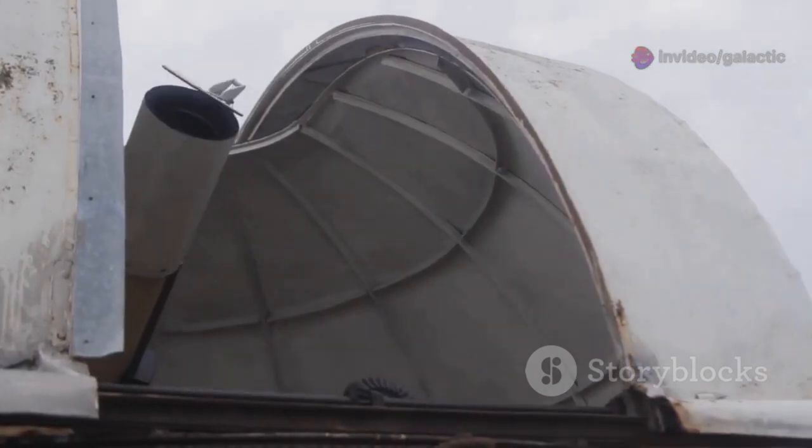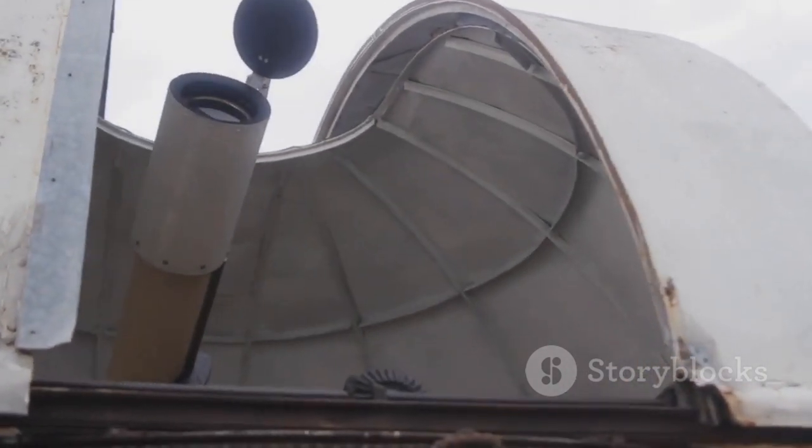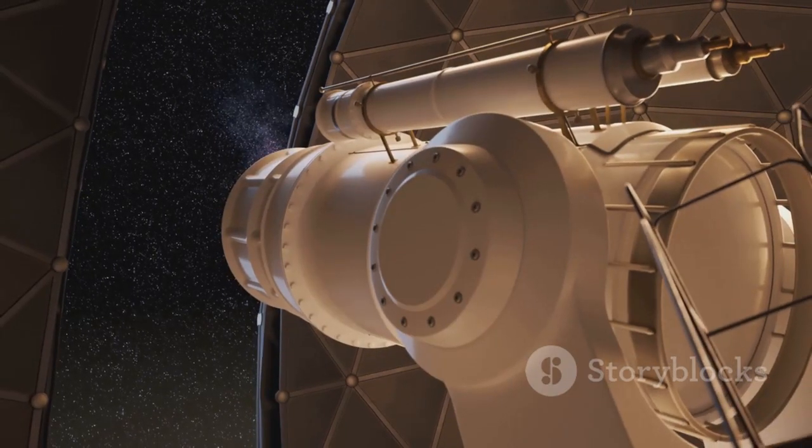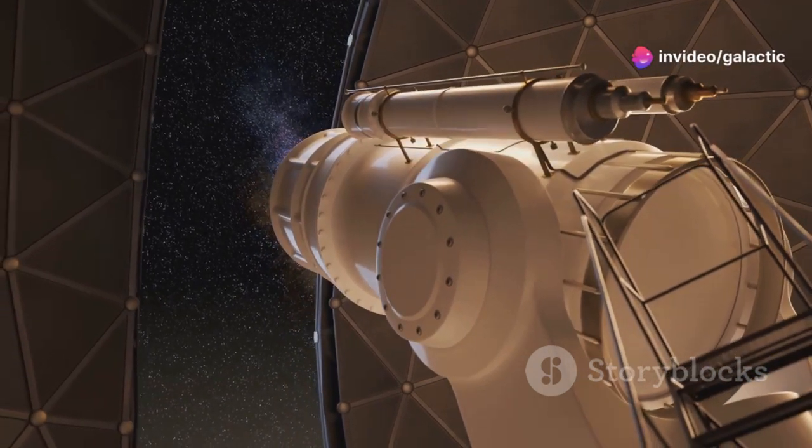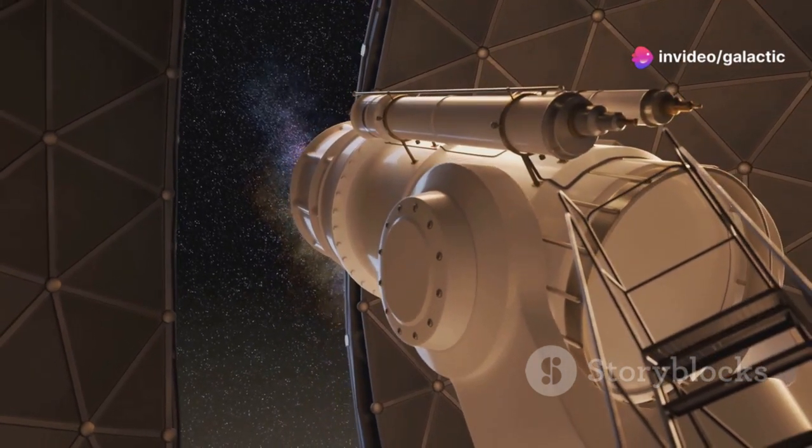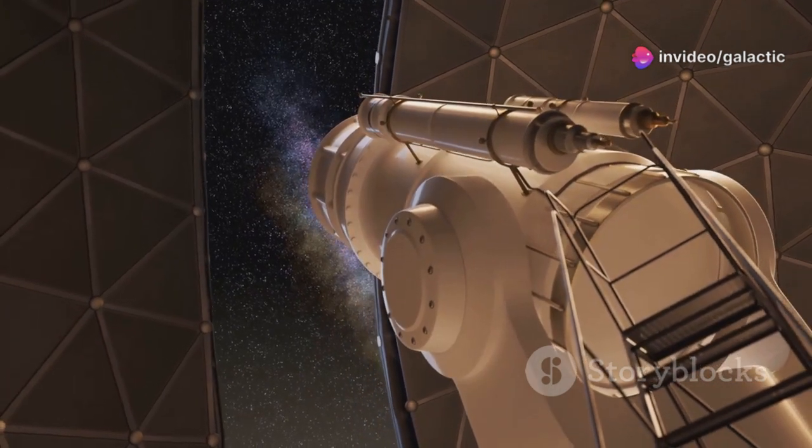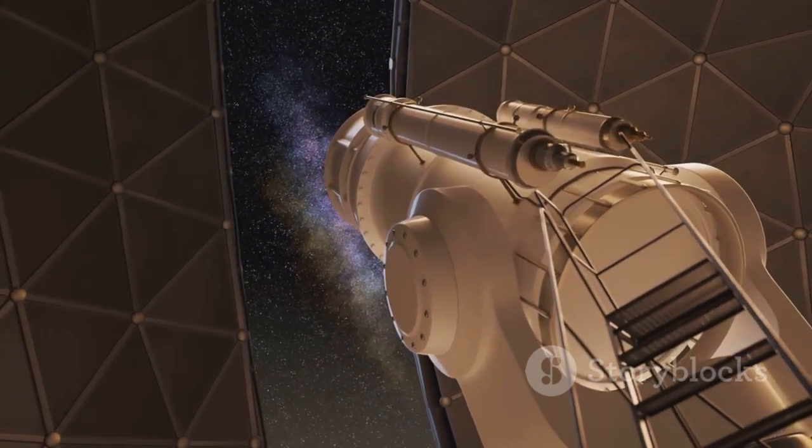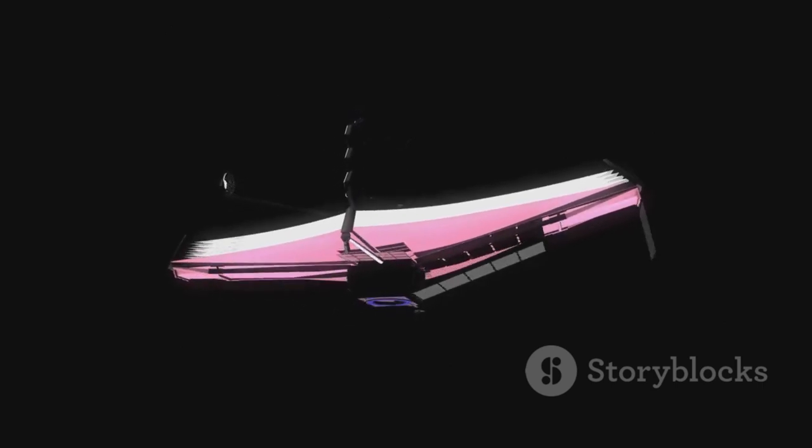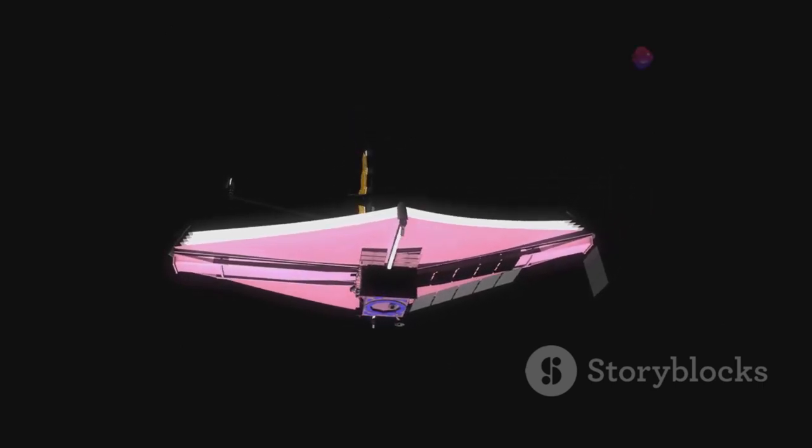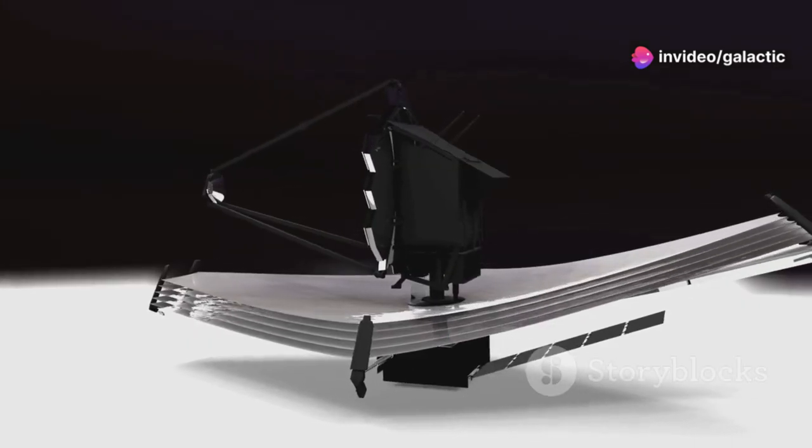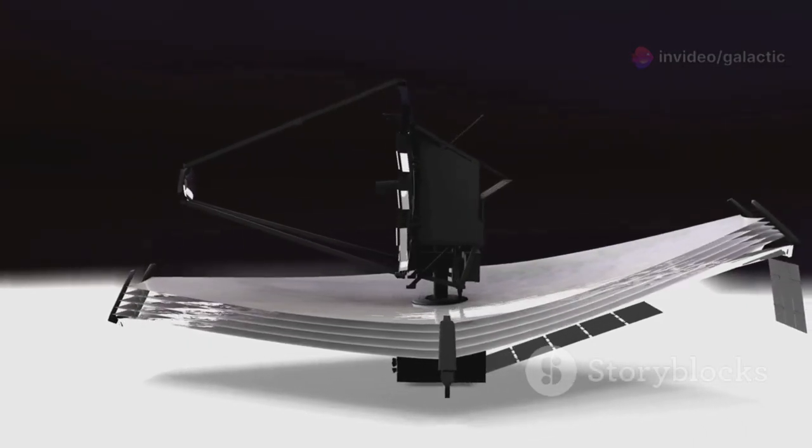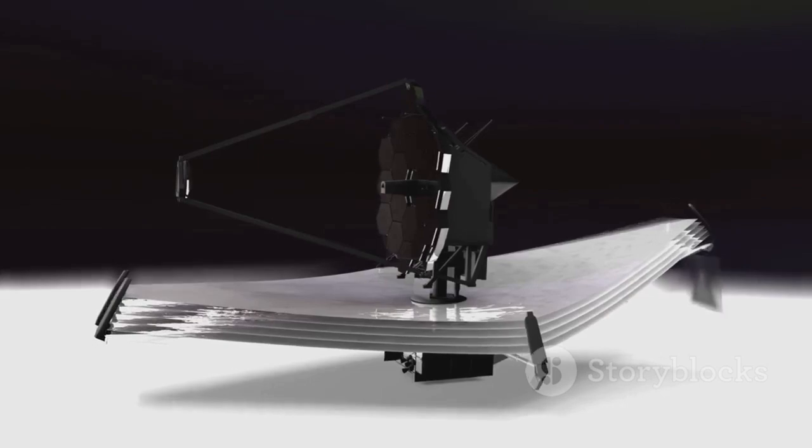Now, this isn't just any old telescope. The JWST is the most advanced observatory ever launched into space. It's designed to see things no other telescope has ever seen before, peering deeper into the universe than we've ever gone. It's like the biggest, most powerful telescope ever built. Imagine a telescope so sensitive, it can detect the faintest glimmers of light from the earliest moments after the Big Bang. That's the kind of power we're talking about here.